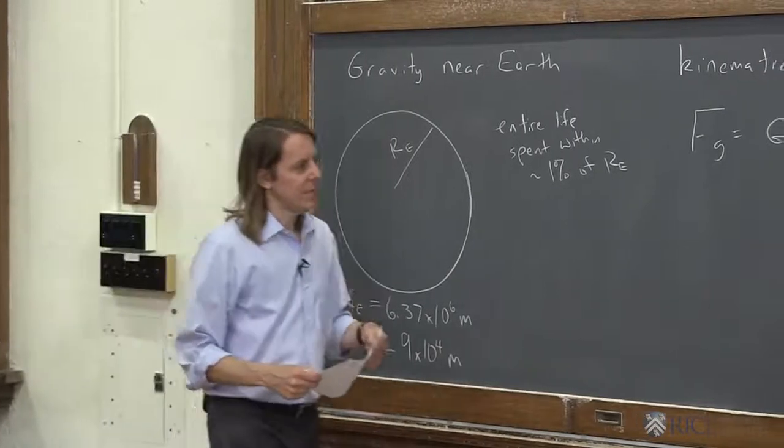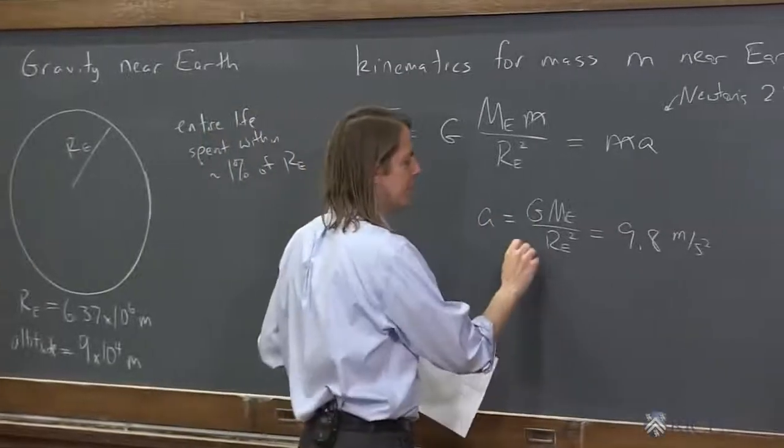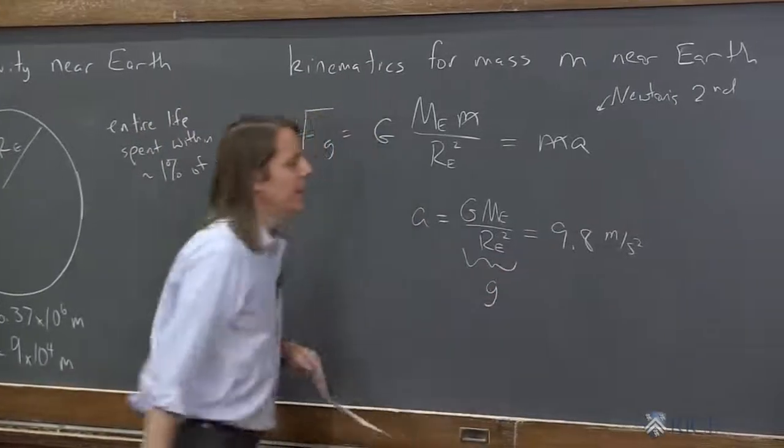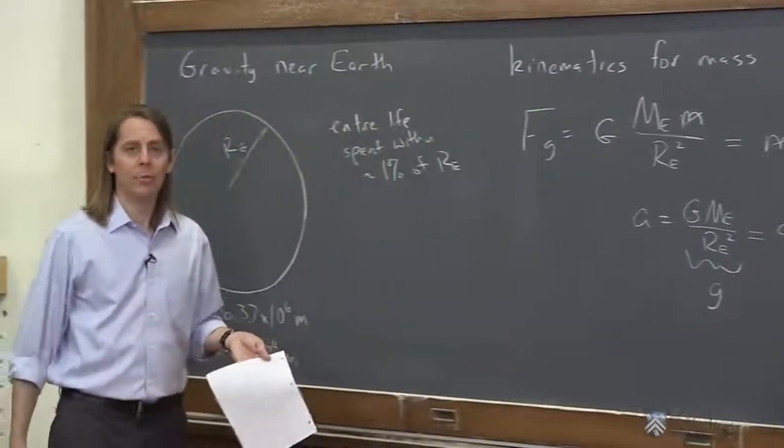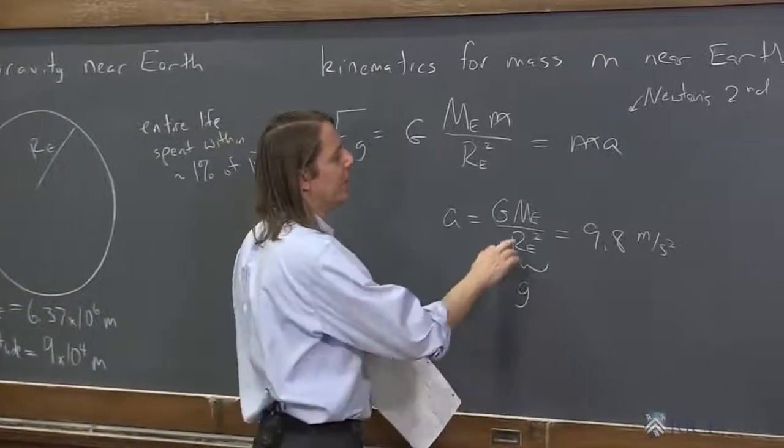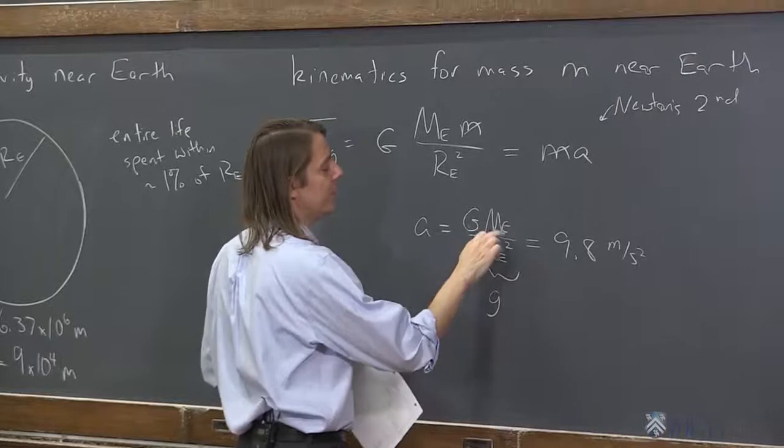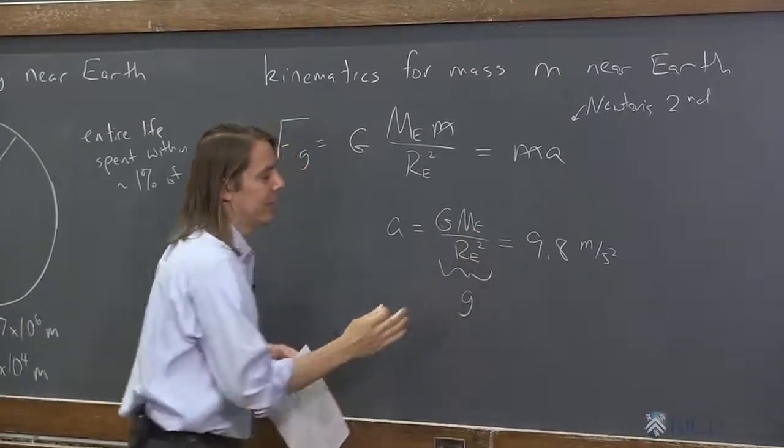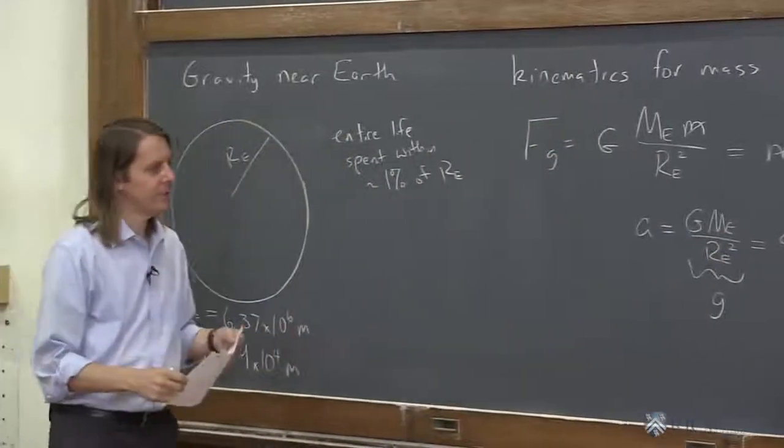So now you see that this expression is basically what we call little g. And you can calculate it for anything, for the moon, for Mars. Anytime you have a planet and you know the surface, all you need to know is the mass of the planet and how big it is. And that will tell you the gravitational acceleration.